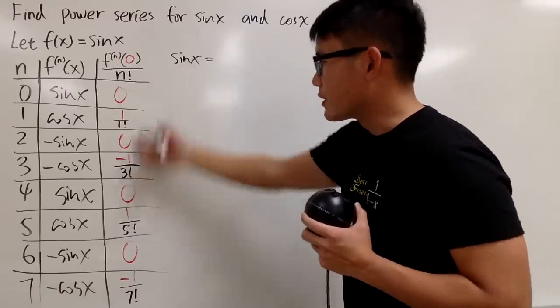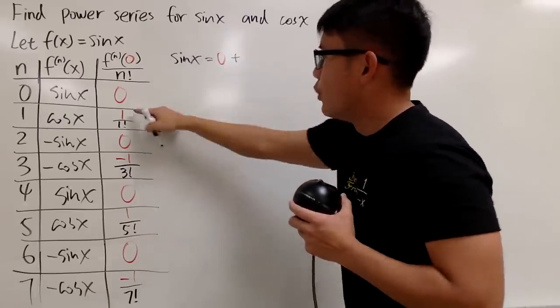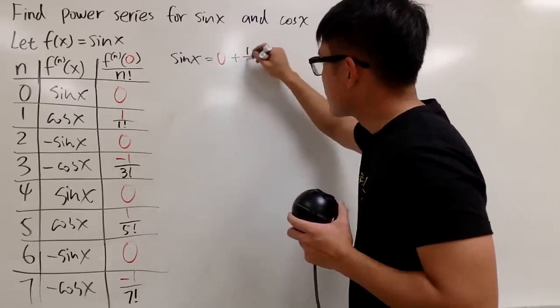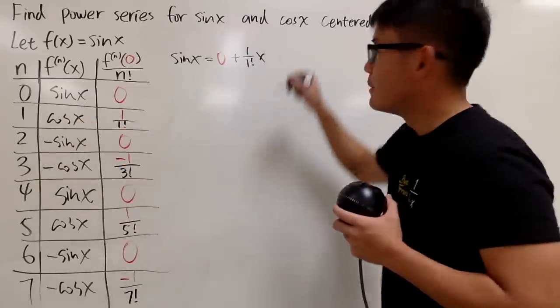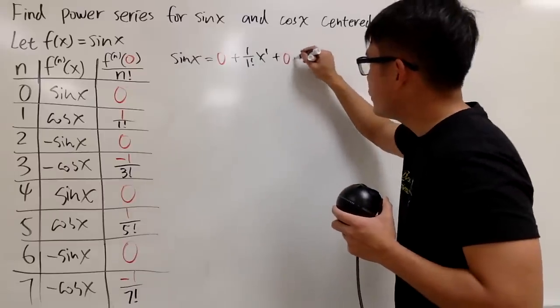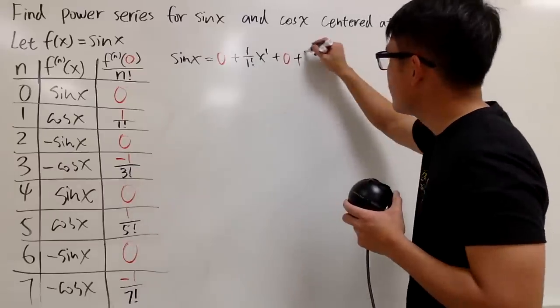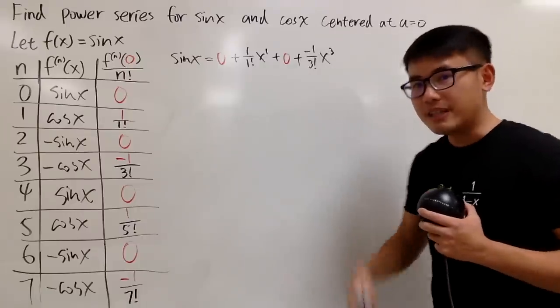The first term from the table is going to be just 0. Next term, we add 1 over 1 factorial times x to the first power. And then we add, next term is 0. And then we add, the next term is negative 1 over 3 factorial x to the third power.